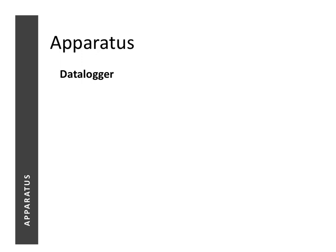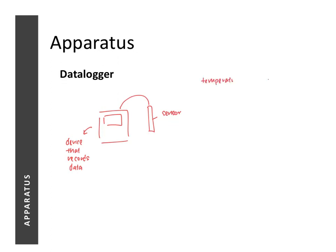What is a data logger? As the name suggests, it is simply an electronic device that records data. On its own, it is pretty useless because it can only record data. In order to use it meaningfully, it needs to be connected to what we call a sensor. The sensor we use depends on what quantity we want to measure. If we want to measure temperature, we use a temperature sensor or heat sensor. If we want to measure the pressure of gas in a container, we use a pressure sensor.